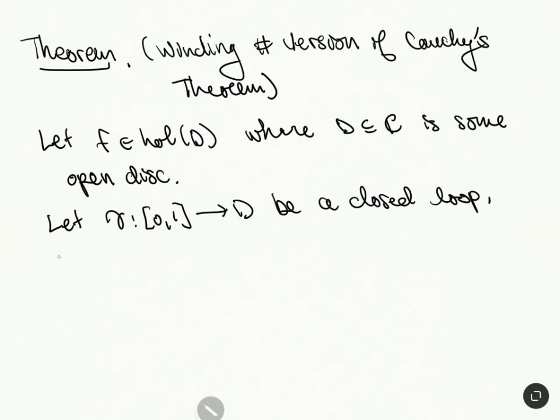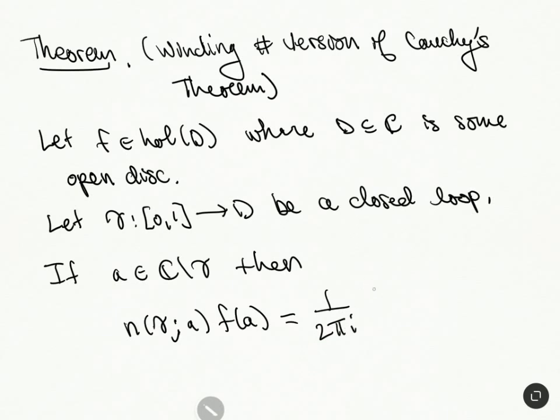So the theorem says that if A is in C the gamma, then the following holds. N gamma of A, F of A. So we have this Cauchy integral formula, but with a winding number.